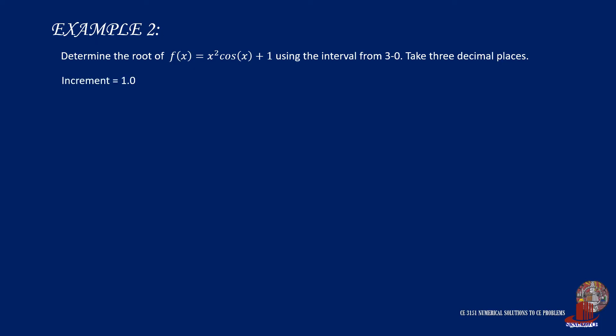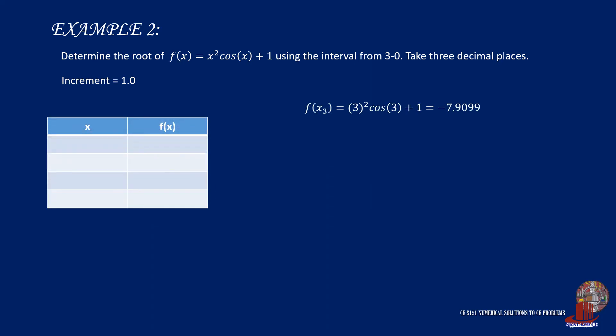Let's use an increment of 1. By starting with 3, place the x value in the equation and come up with -7.9099. By taking an increment of 1, we continue the search by plugging the value of 2 in the equation, giving us -0.6646. By using x = 1, we arrive at f(x) as 1.5403.